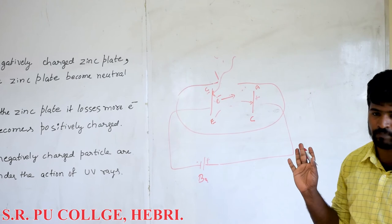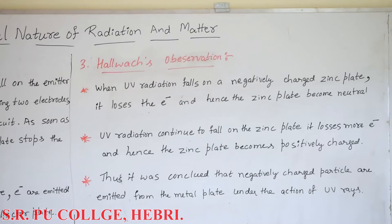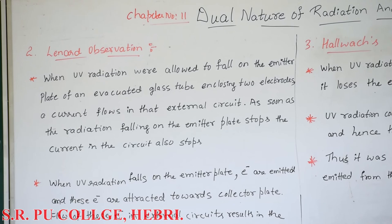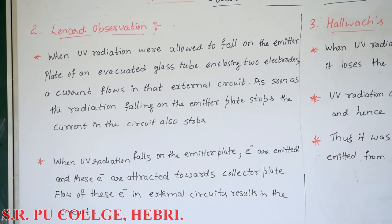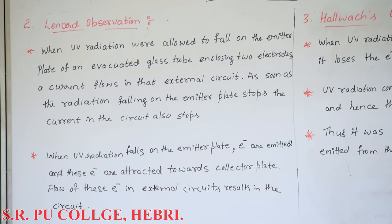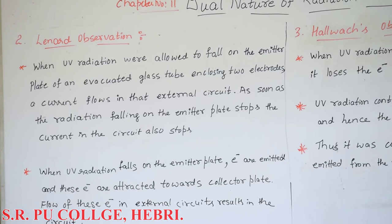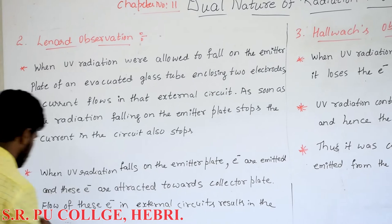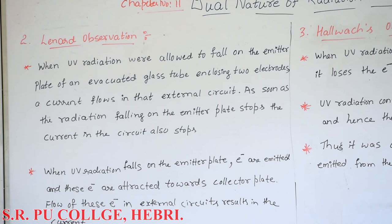That is the second observation based on the photoelectric effect. First observation: when UV radiation is allowed to fall on the emitter plate of an evacuated glass tube enclosing two electrodes, a current flows in the external circuit; as soon as the radiation stops, the current also stops. Second observation: when UV radiation falls on the emitter plate, electrons are emitted and attracted towards the collector plate; flow of these electrons results in current. This is considered the Lenard observation. One more three-mark important question: explain Lenard as well as Hallweck's observations on the basis of the photoelectric effect.